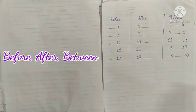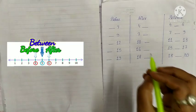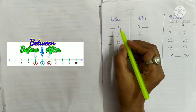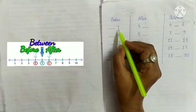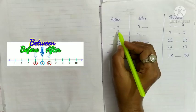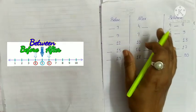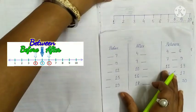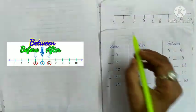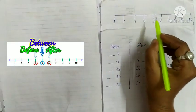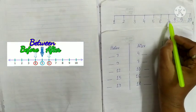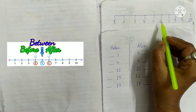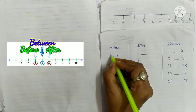Let's take some examples of before, after, and between numbers. First, solve before number. Here, 7. Before means previous number. 1, 2, 3, 4, 5, 6, 7. Before 7 is 6. Write 6.